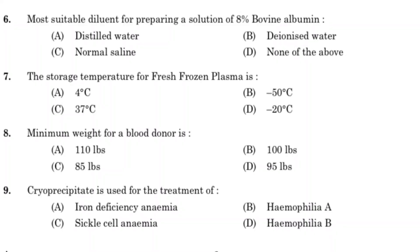Seventh question: storage temperature for fresh frozen plasma. Option A: 4 degree Celsius. Option B: minus 50 degree Celsius. Option C: 37 degree Celsius. Option D: minus 20 degree Celsius. Answer is Option D, minus 20 degree Celsius. Plasma is usually stored frozen at minus 18 degree Celsius for one year or at minus 65 degree Celsius for 7 years. Once thawed, it can be kept at 1 to 6 degree Celsius for 5 days.